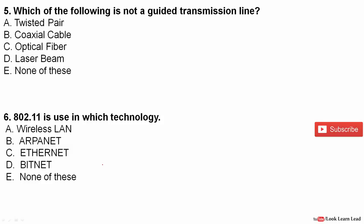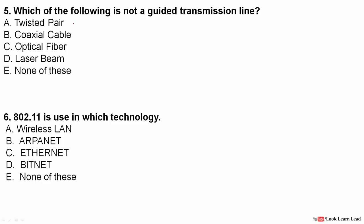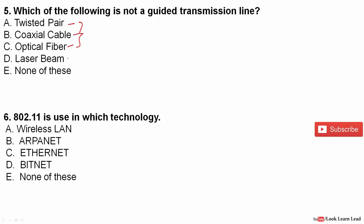Which of the following is not a guided transmission medium? Twisted pair, coaxial, and optical fiber are all guided media. The remaining option, laser beam, is not guided because it is based on light. So laser beam is the answer.